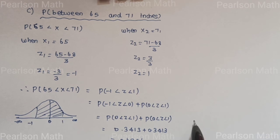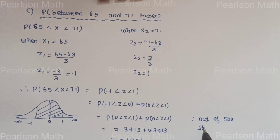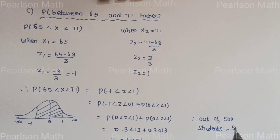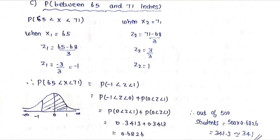Out of 500 students: 500 × 0.6826 = 341.3, approximately 341 students. That's it.